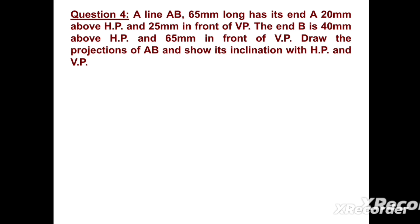The length of the line is given as 65 mm. Point A and point B both are in the first quadrant. We need to find out angle theta and angle phi. Now we are going to prepare the solution of this problem.